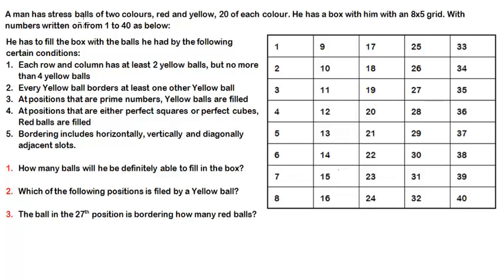Let us read the case. A man has stress balls of two colors — red and yellow, 20 of each color. So he has 20 red balls and 20 yellow balls, and he has a box with him: an 8×5 grid with 8 rows and 5 columns, with numbers written from 1 to 40.